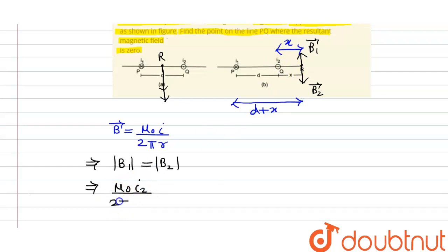This is equal to mu naught multiplied by i1 current, which is flowing in the P wire here, divided by 2 pi, divided by the distance between the P wire and the R point. It is d plus x. It is d plus x.